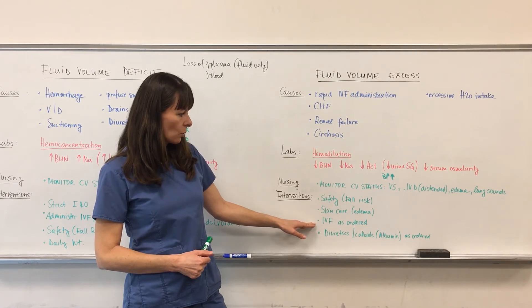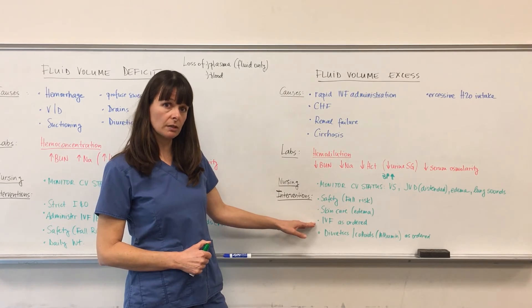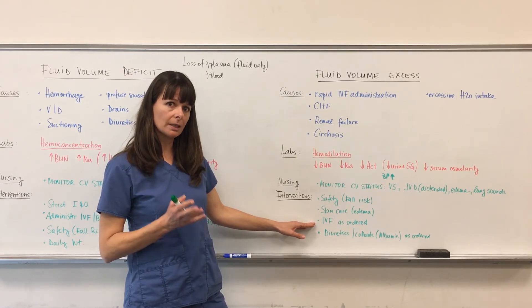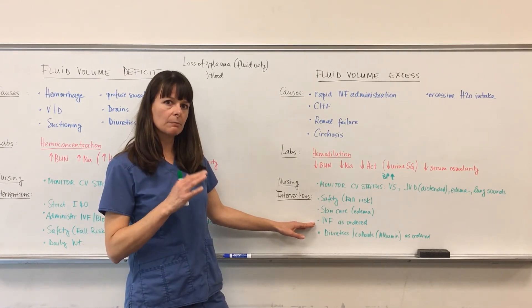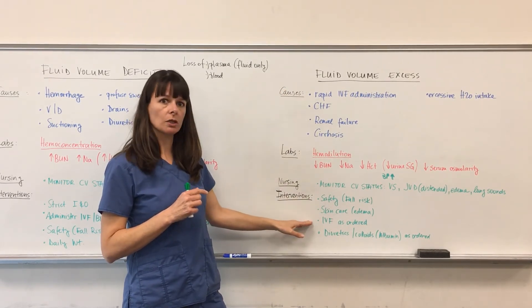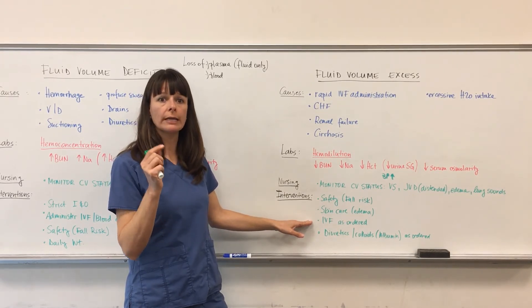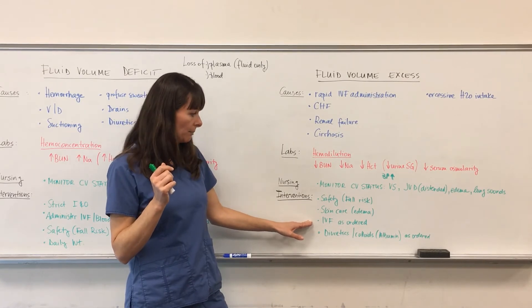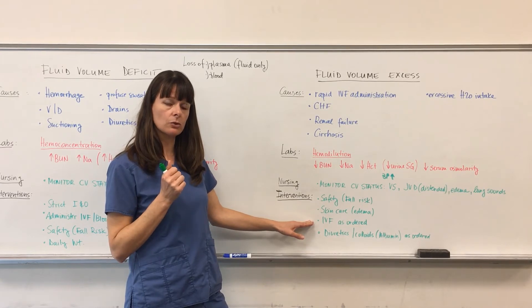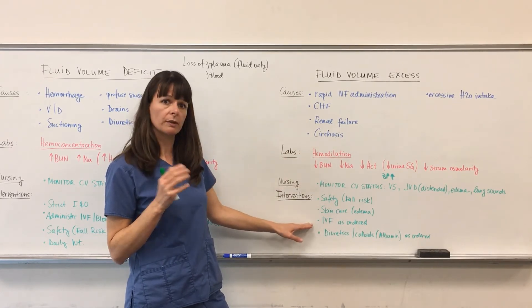Now IV fluids as ordered. That all depends on how significant the edema is, how significant the fluid volume excess is. Typically the patient will be saline locked, but as maybe the fluid volume excess is improving, we might give the patient IV fluids at just a very slow rate, something like 15 ml per hour. But be very careful and check your orders here very carefully as the type of IV solution as well as the rate, because if we have fluid volume excess we do not want to give the patient any additional fluids.